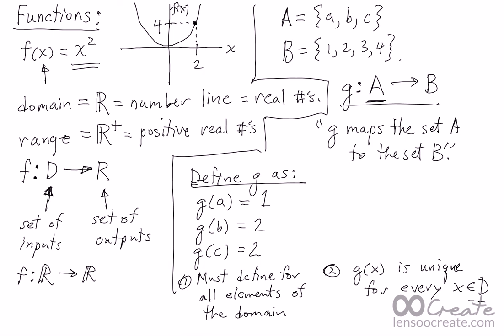Okay, that means I can't say that G of a is equal to 1, but it's also equal to 2 sometimes. That we can't have. Okay, there's only one output.